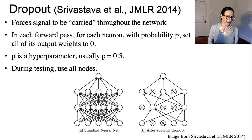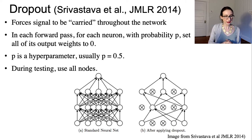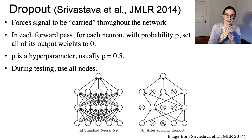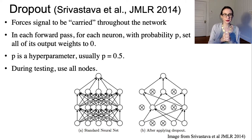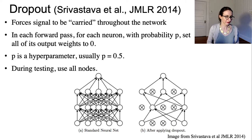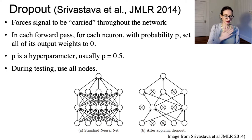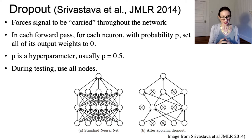Dropout is another technique useful for training neural networks, which forces signal to be carried throughout the entire network. During training, it could be that only certain nodes actually get used, with the rest never coming into contact with gradients. Dropout tries to prevent that: in each forward pass of the network, for each neuron, with some probability p, you set all of its output weights to zero.